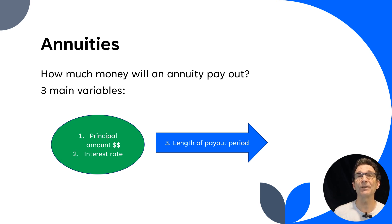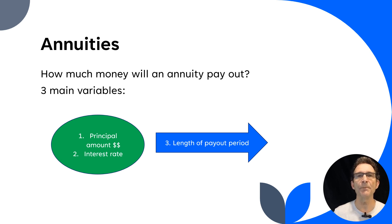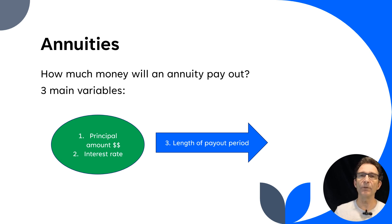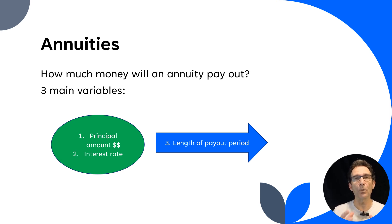There are three main variables — the key moving parts inside of an annuity. Number one is the principal amount. With an annuity, you are putting in a principal amount that is then going to gather with a set specific kind of interest rate. That can vary depending on the product, but it has a principal amount and then it's going to grow according to a certain interest rate. That's the second variable.